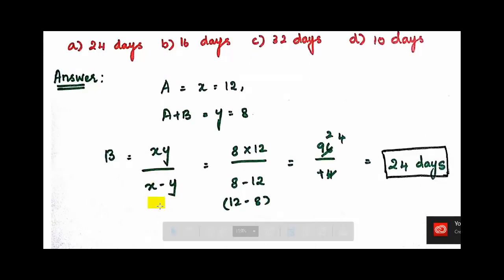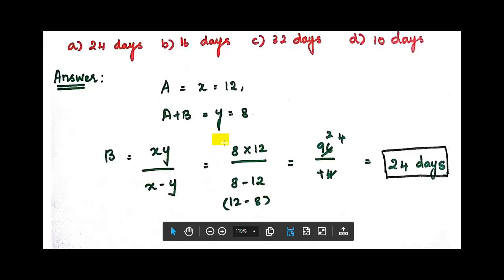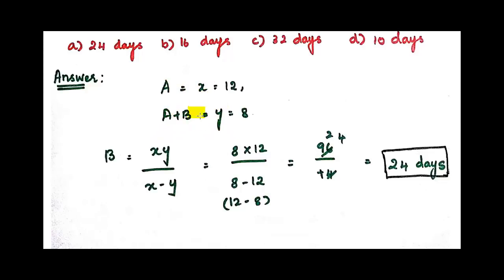I already have a shortcut formula. I will substitute that formula. A and B together are 8 days, and A alone is 12 days.